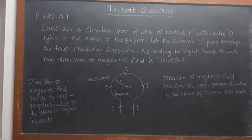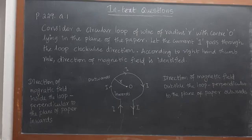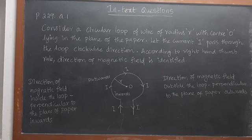The question is, consider a circular loop of wire lying in the plane of the table. Let the current pass through the loop clockwise, apply the right-hand rule to find out the direction of magnetic field inside and outside the loop.